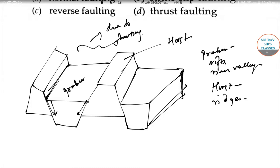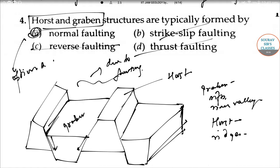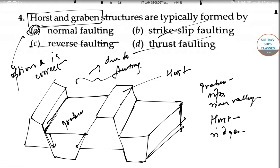This is the structure of graben and horst — a kind of three-dimensional structure. Now the question asks whether this is formed from normal faulting, strike-slip faulting, reverse faulting, or thrust faulting. After discussing these concepts, it should be clear: it is not strike-slip faulting, not thrust faulting, not reverse faulting. The correct answer is normal faulting. Option A is correct.